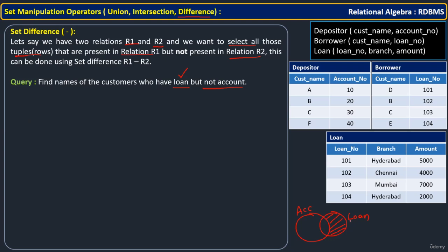So first, the query selects customer names from the borrower table. This gives us D, B, C, and E. Then we also select customer names from the depositor table. This returns A, B, C, and F. These two intermediate results are not the final answer — we still need to apply the set difference operator.